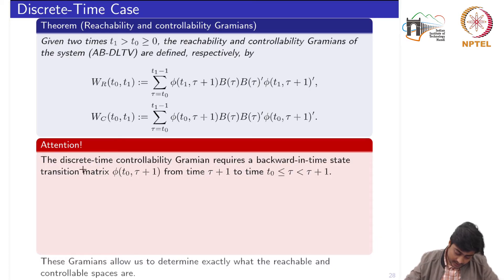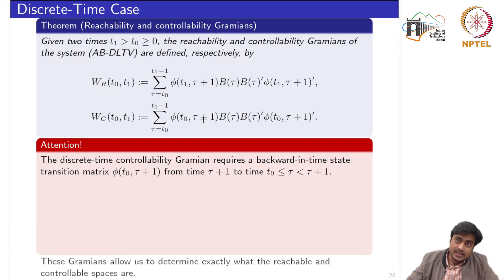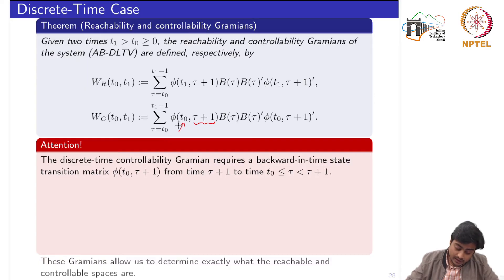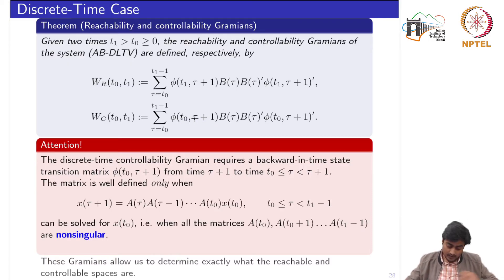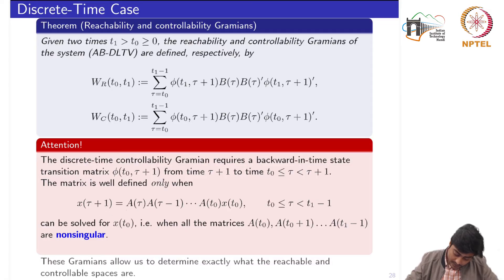Note that the discrete time controllability Gramian requires a backward-in-time state transition matrix. For example, starting with τ equal to t0, it gives φ(t0, t0+1), where the two arguments within the state transition matrix indicate that the input is applied at one time and the response is collected at another. This backward-in-time computation imposes restrictions: the state transition matrix is well defined only when all these matrices at different times are non-singular.